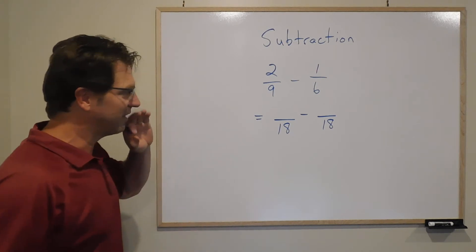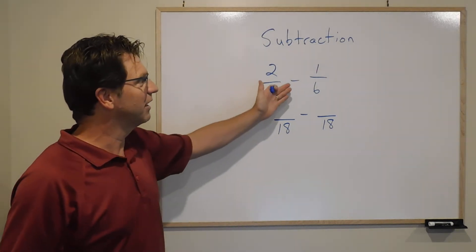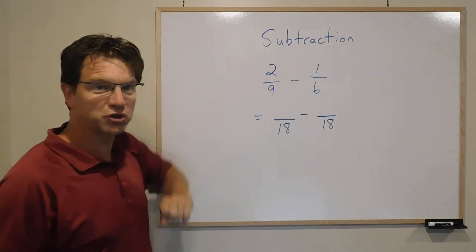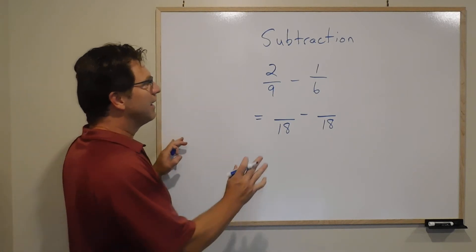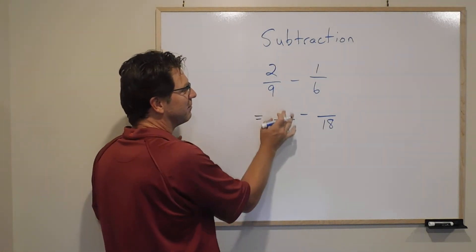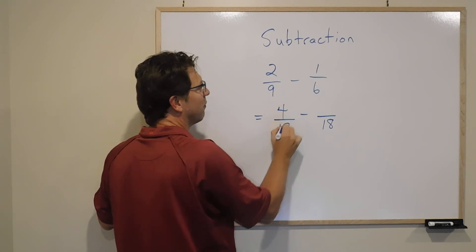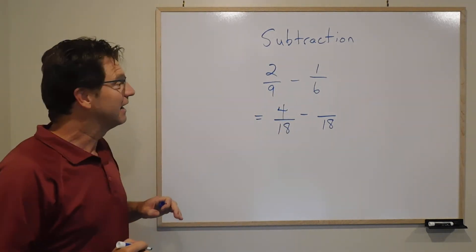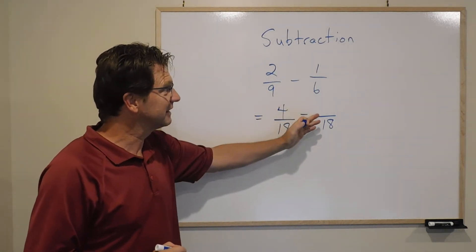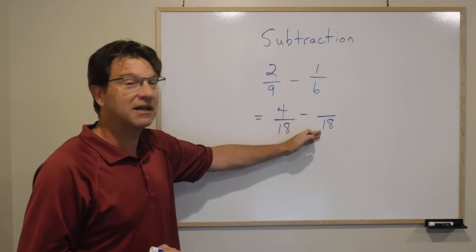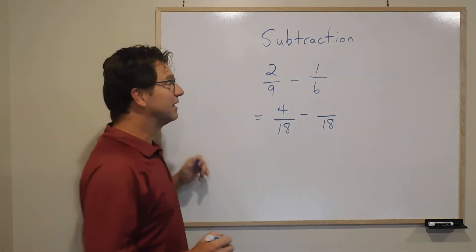But in this question, instead of adding 2 over 9 plus 1 over 6, we are subtracting in this one. It doesn't change that I had to multiply the 9 by 2 to get 18, so 2 times 2 is 4, so that's 4 over 18. And also I had to multiply the 6 by 3 to get 18, so 1 times 3 is 3.